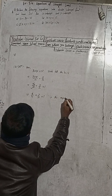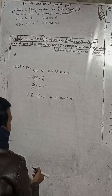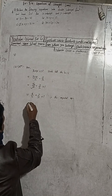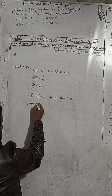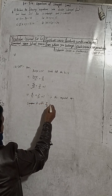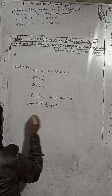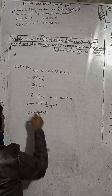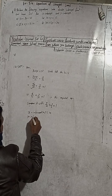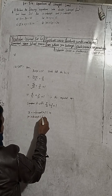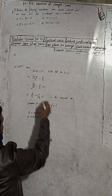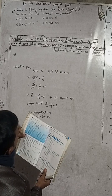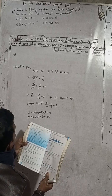This is the required equation in double intercept form. Comparing with x/a + y/b = 1, we get x-intercept a equal to 4 and y-intercept b equal to 12. The book answer is x by 4 plus y by 12 is equal to 1 — correct.